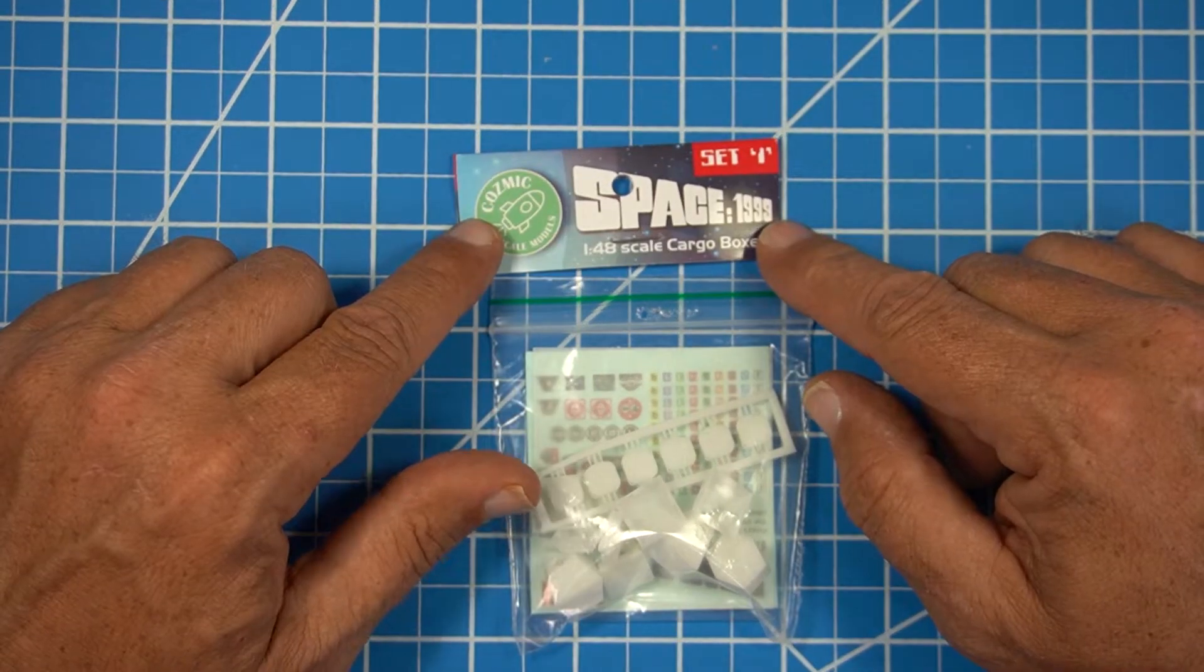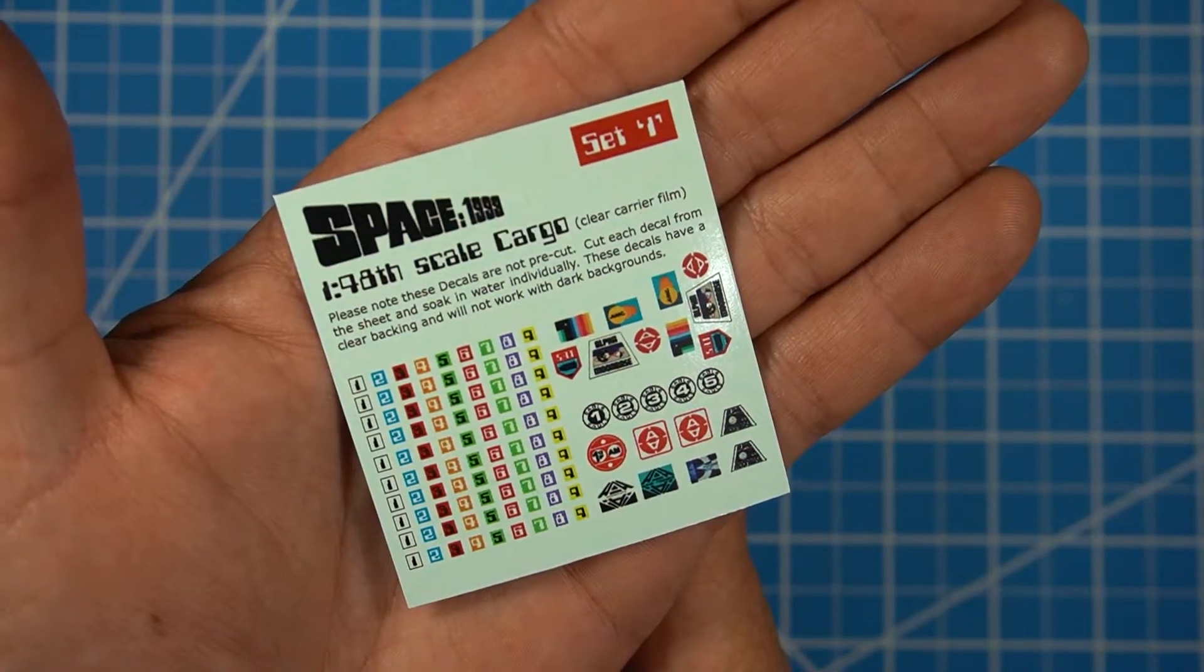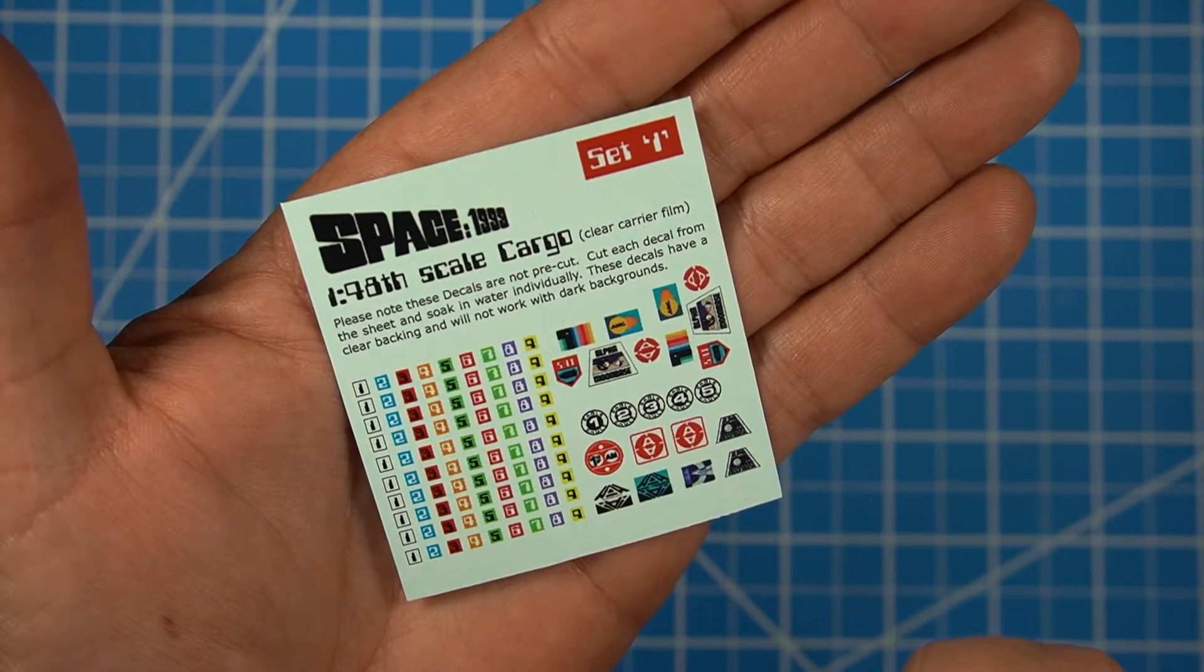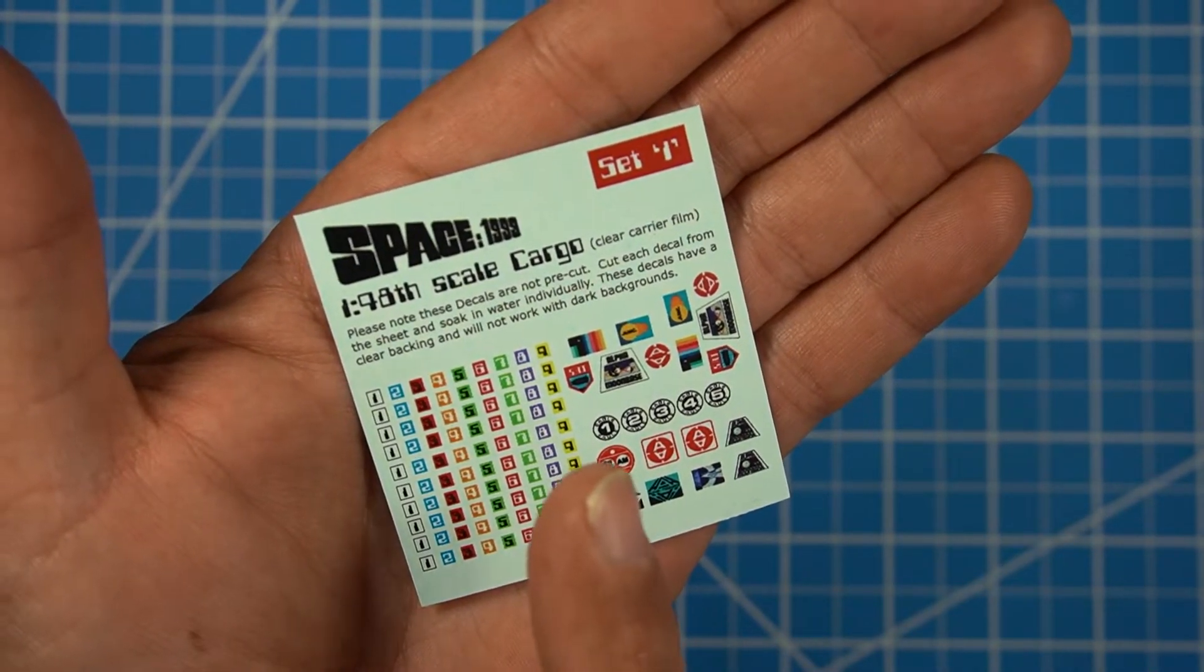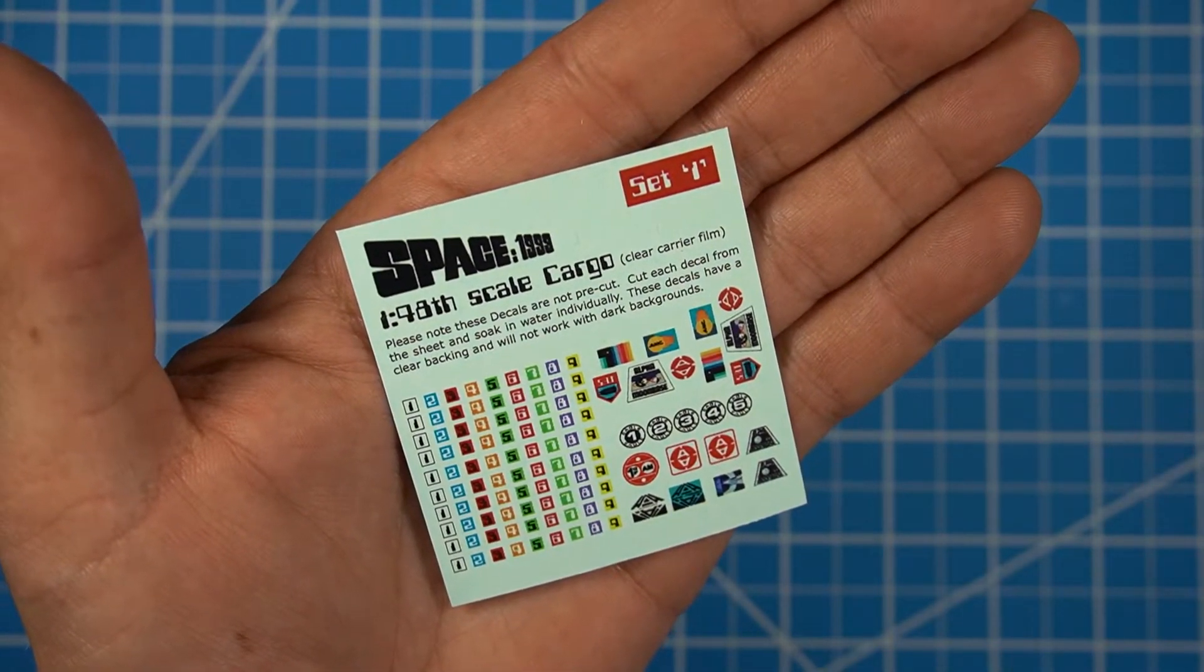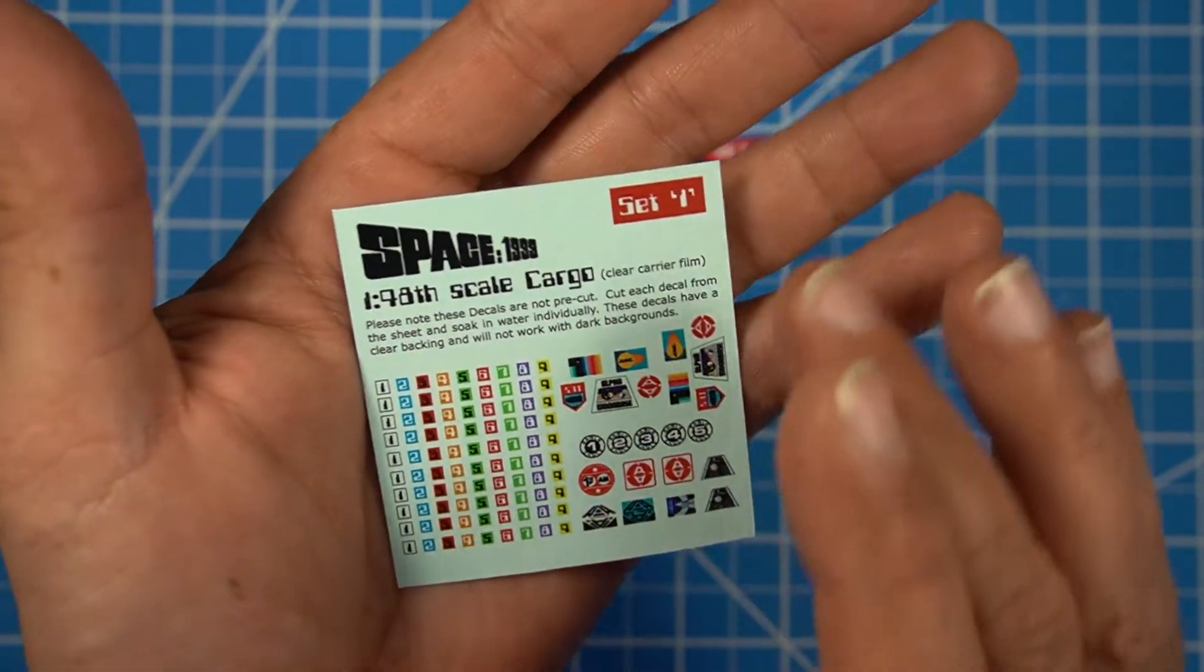I've already taken the label off to make it easier to get into the package. The next thing we're going to look at are cargo boxes in 1/48th scale for Space 1999. Inside the package comes this nice decal sheet, plenty of numbers, plenty of things to put on the cargo boxes. This is the only decal sheet that tells you this is a full film over them. So I don't know why the other ones don't but this one does actually tell you. Very nice colors on here, so these are pretty cool.